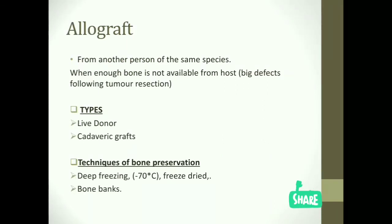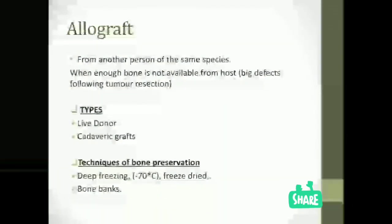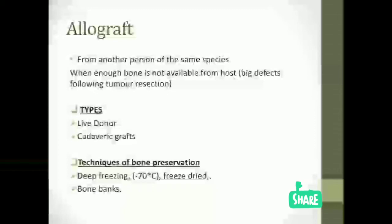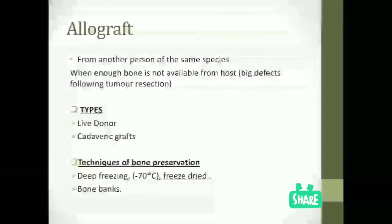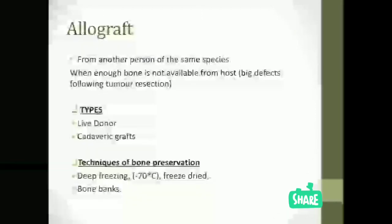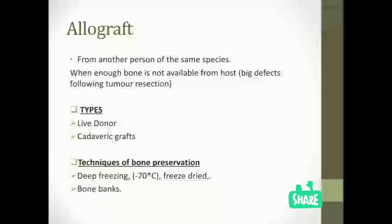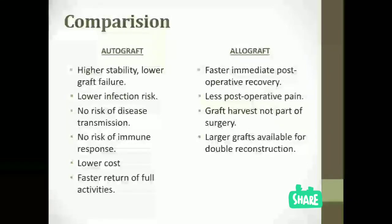Now let's move to allografts. These are grafts taken from another person of the same species. Allografts are useful when enough bone is not available from the host to be grafted. They are of two types: live donor grafts and cadaveric grafts, which are taken from a dead donor. Allografts require techniques of bone preservation, with two commonly popular methods being freezing and storage in a bone bank.